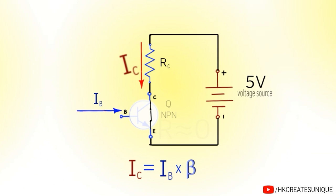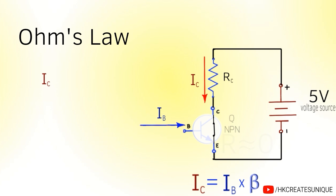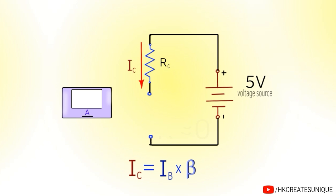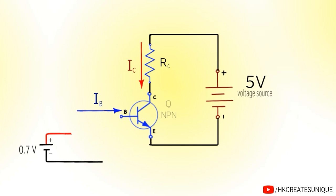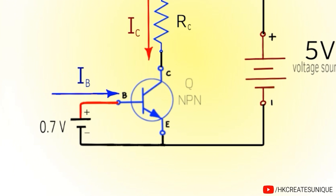To find collector current, you may apply Ohm's law: IC is equal to voltage divided by resistance. Or you can just connect an ammeter in series with the load to find the collector current. Now when it comes to providing base current, you may directly apply 0.7V signal at the base to emitter of the transistor.